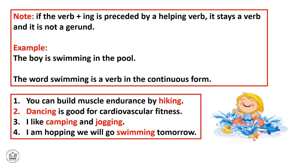You can build muscle endurance by hiking. 'Hiking' in this sentence is a noun. Dancing is good for cardiovascular fitness — 'dancing' here is a noun. I like camping and joking — 'joking' and 'camping' are nouns, they are gerunds. I am hoping we will go swimming tomorrow — 'swimming' here in this sentence is the gerund; it is a noun.